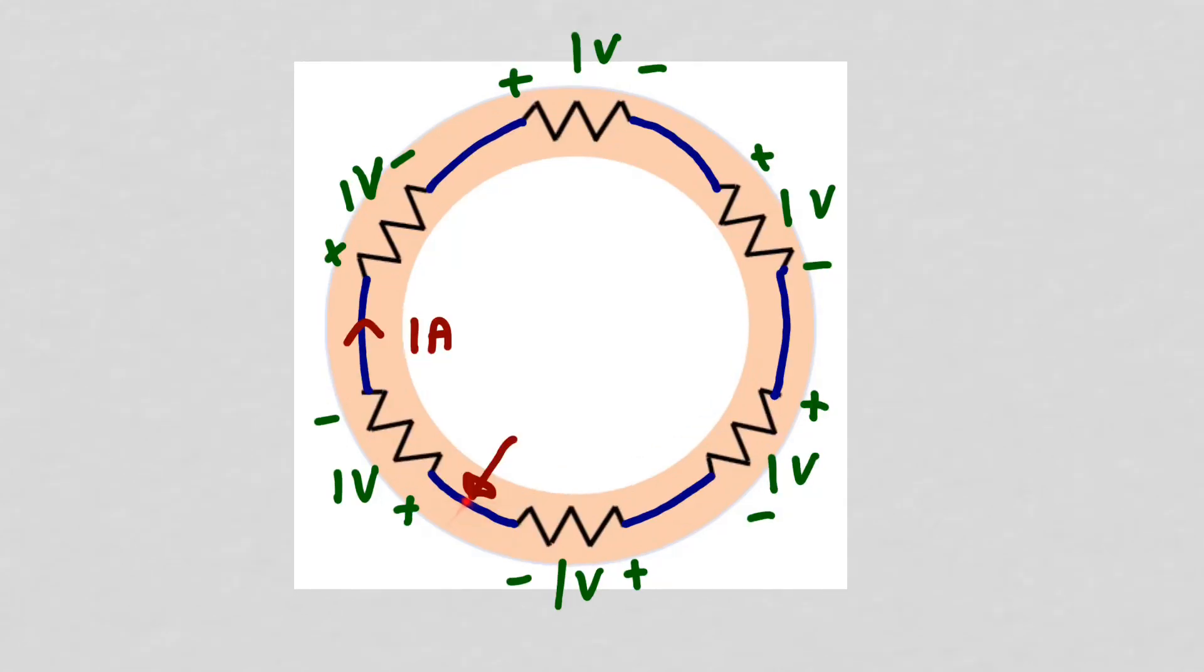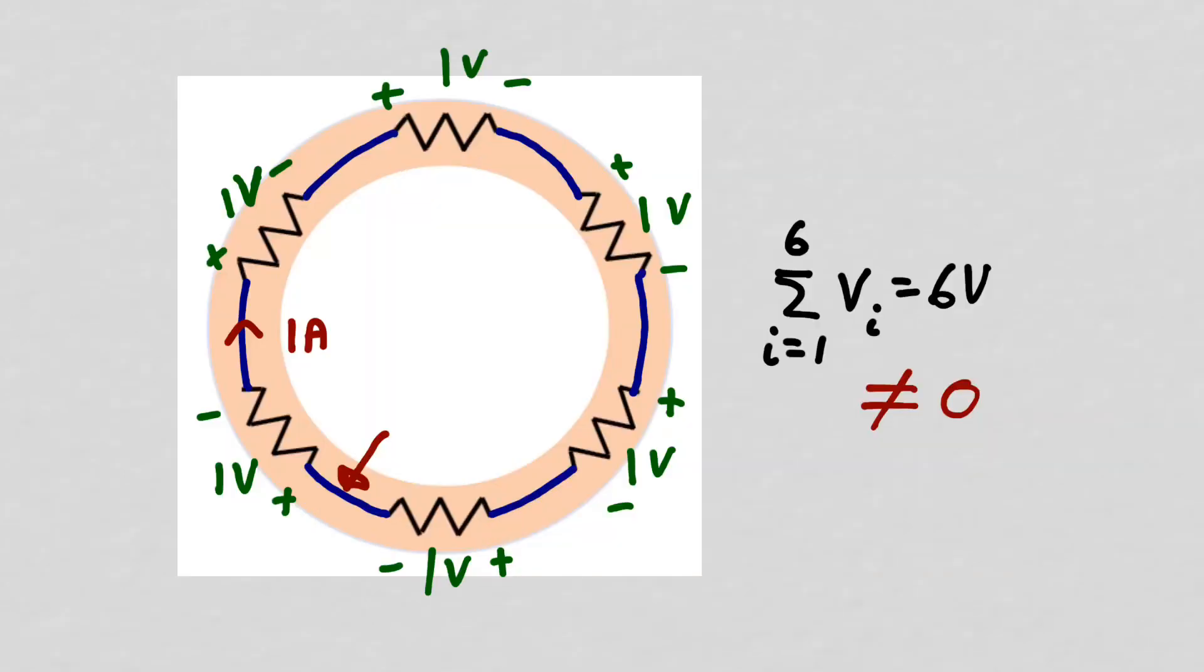If we start at this point and sum the voltage drops around this closed loop here we will obtain 6 volts. So the sum of the voltage drops around this closed loop is 6 volts and not 0 as Kirchhoff's voltage law would tell us.